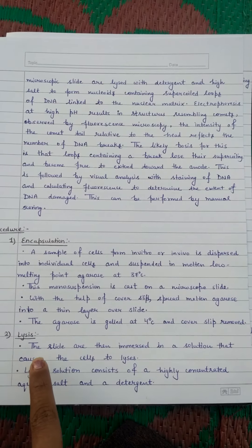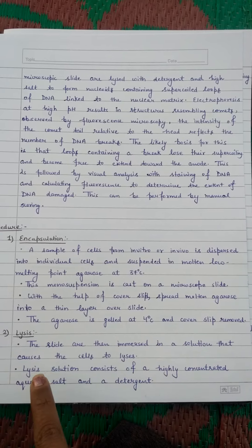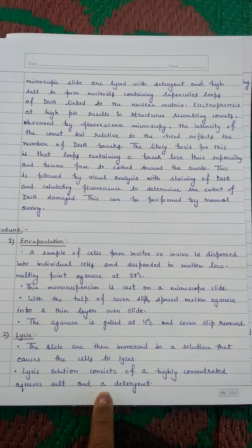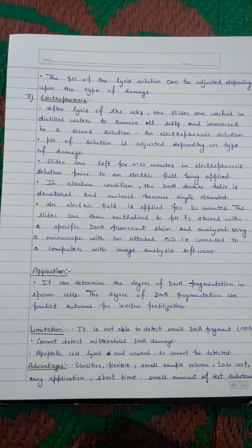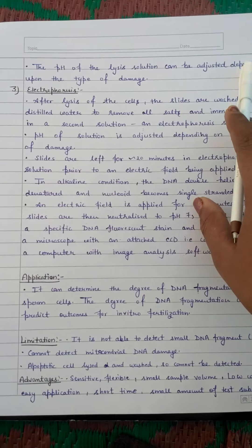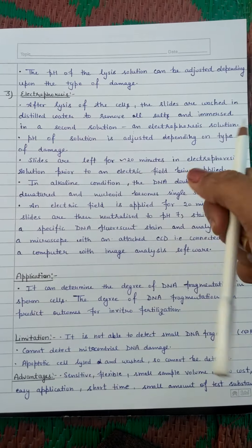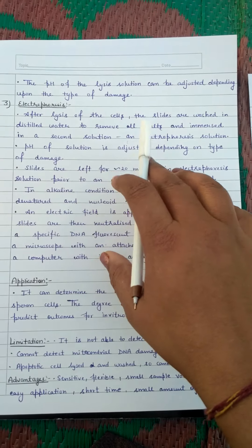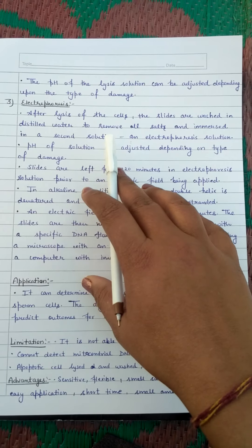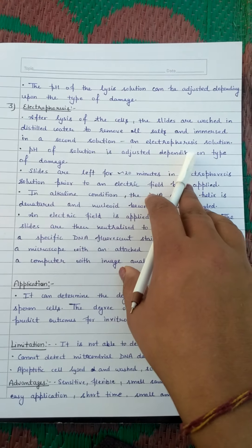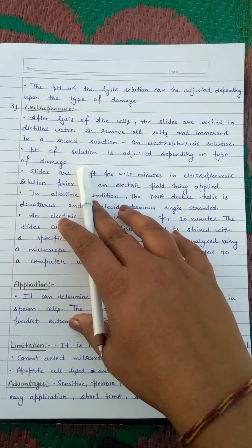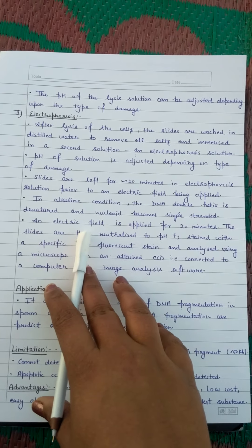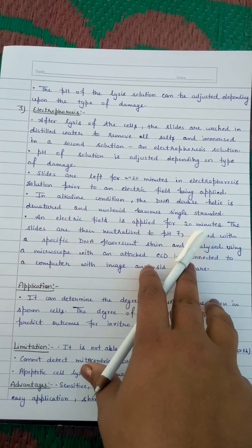For lysis, the slides are immersed in a solution that causes the cells to lyse. The lysis solution consists of highly concentrated aqueous salt and a detergent. The pH of the lysis solution can be adjusted depending on the type of damage to be detected — single strand or double strand. After lysis, the slides are washed with distilled water to remove all salts, then dipped in electrophoresis solution. The pH is adjusted and slides are left for 20 minutes, after which the electric field is applied for 20 minutes.